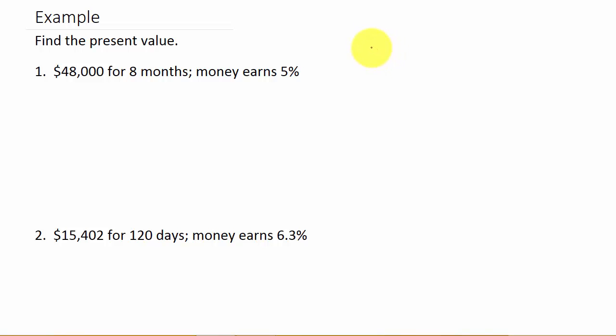So let's just go ahead and write our formula down. P equals A over 1 plus RT. So now we need to know what A is, R, and T. So A, that's the 48,000. They're wanting us to find the present value, so they're giving us the future value. So A is equal to the 48,000. Okay, R, that's the interest rate, the 5%, and we will convert it to a decimal.